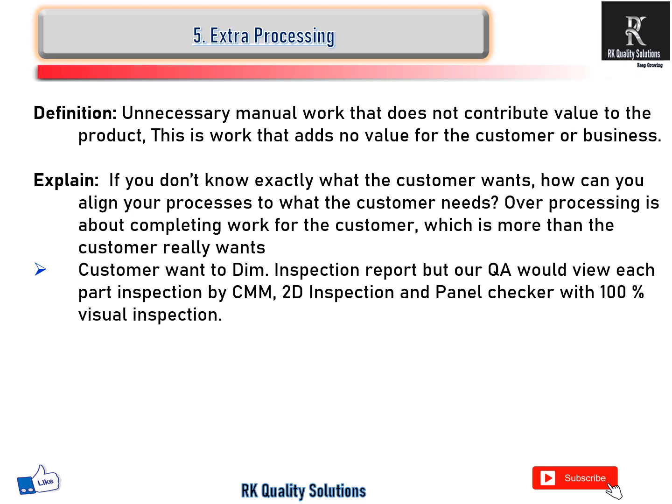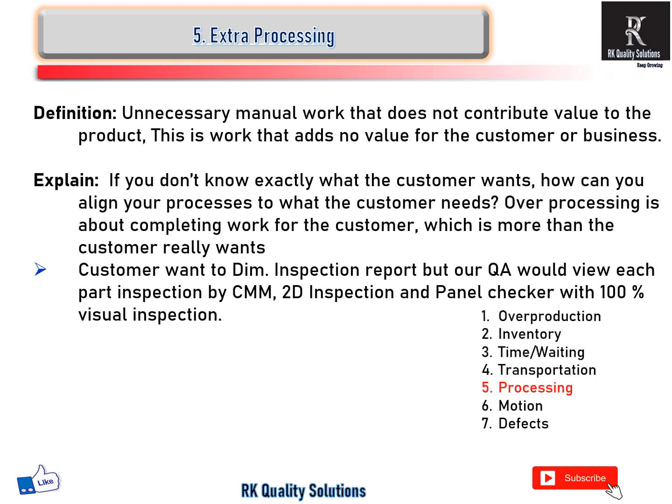Fifth is extra processing — unnecessary manual work that does not contribute value to the product. This is any work that adds no value for the customer or the business. For example, the customer requires a 2-dimension report, but our QA performs full part inspection including CMM, 2D inspection, panel checker, and 100% visual inspection. This extra processing means no added value for the customer or the business.